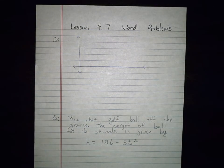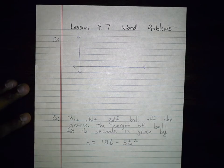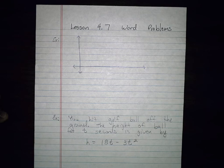Alright, this is lesson 4-7, more word problems with parabolas. So we're going to talk about something called projectile motion. Projectile motion is like you throw something in the air vertically, or depending on how you throw it.